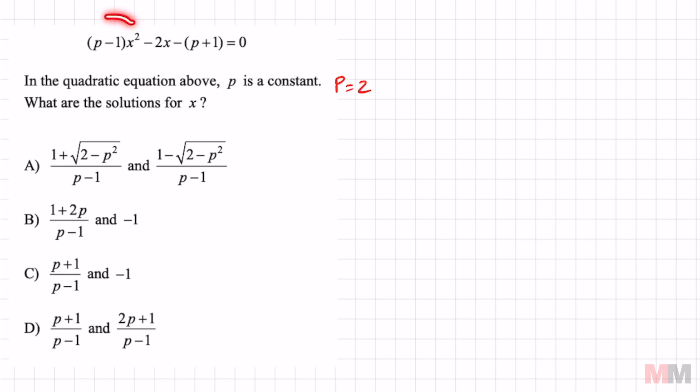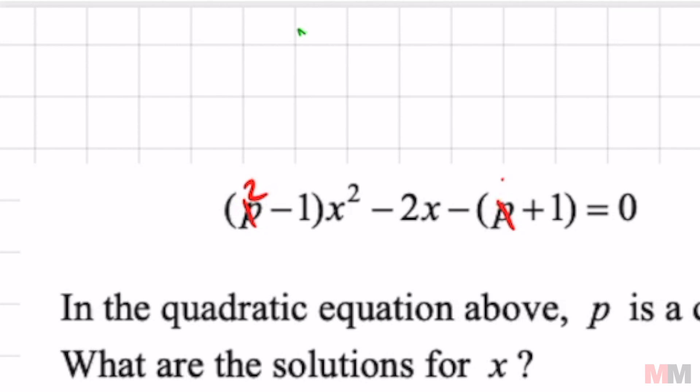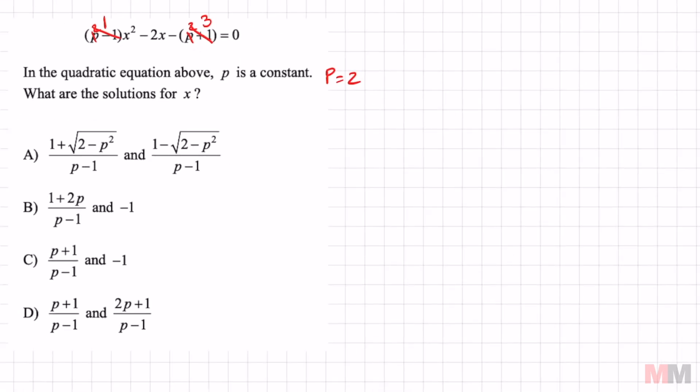So let's go ahead and plug that into the main quadratic equation. I'm just going to write it above to save some time from rewriting. Two minus one is going to give me one. Two plus one will get me three. Let's go ahead and rewrite that.